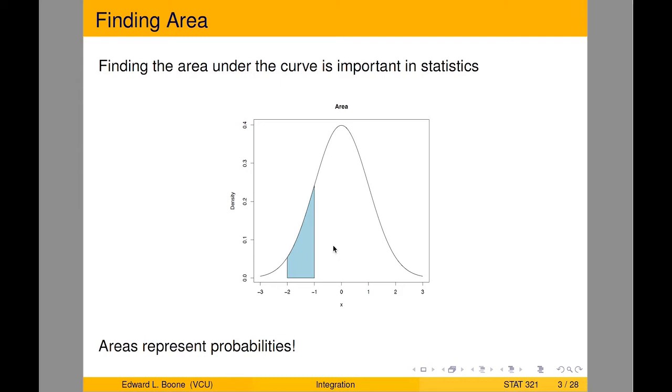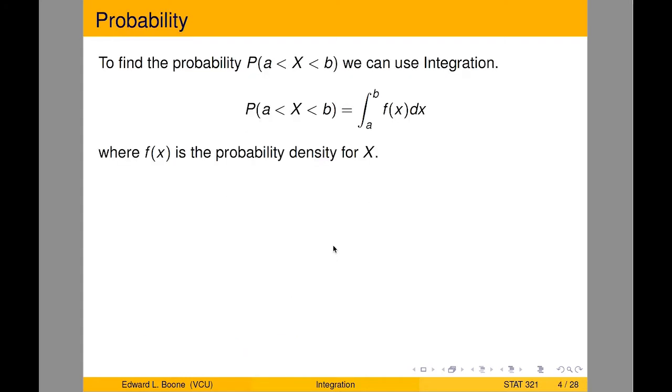Finding these areas is very important, especially when you don't have very nice distributions. To find the probability that random variable x is between a and b, you would use integration if you have a density.